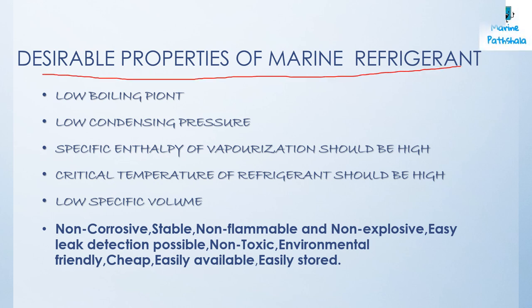Desirable properties of marine refrigerant: mainly there are five main desirable properties. Low boiling point, because the liquid has to vaporize easily at the evaporator coil to cause cooling. Low condensing pressure, the pressure to which the compressor has to compress the drawn gases to convert them back into the liquid at the condenser should be low to avoid heavy parts and reduce the chances of leakage. High specific enthalpy of vaporization to reduce the quantity of refrigerant in the system.